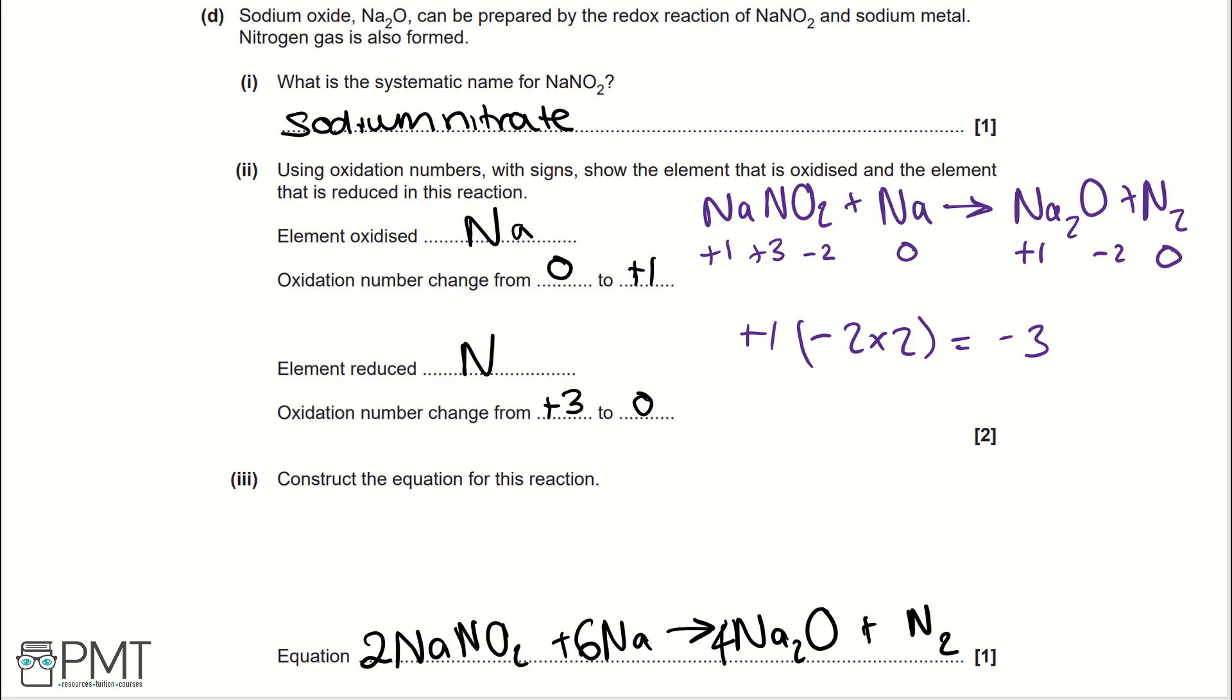For parts 2 and 3, as they're combined, in part 2, you get a mark for the correct element oxidised and the correct element reduced, and in the second mark for their oxidation numbers being correct. Part 3, the mark is for the whole, complete equation being correct.